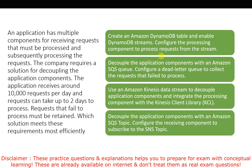The second option — decoupling with an Amazon SQS queue and configuring a Dead Letter Queue to collect failed requests — matches the requirement exactly. SQS is ideal for decoupling application components. Its standard queues support up to 120,000 in-flight messages, and messages can be retained for up to 14 days. The application receives 10,000 requests per day and needs up to two days of retention, so SQS satisfies both needs.